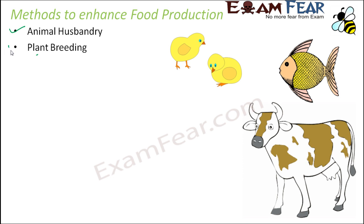Next is plant breeding, where we will talk about food production enhancement from plants. From plants we get a lot of things — different vegetables, different fruits, and all the cereals like rice, wheat, and maize. A variety of food materials are obtained from plants and they are extremely nutritious; some are rich in carbohydrates, some in proteins, some in minerals. We will see how the production of food from plants can be increased.